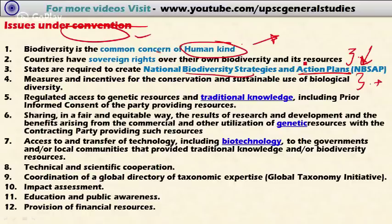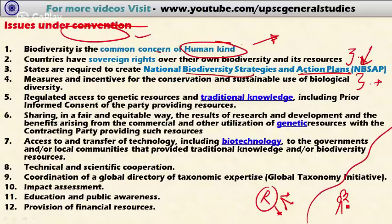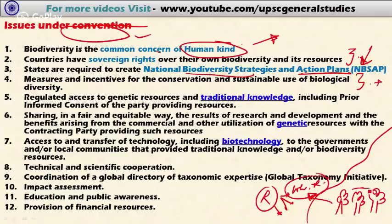Regarding access to genetic resources: biodiversity has various useful products for mankind. For example, in a forest we have wild plants — the wild counterparts of present-day crops including wheat, rice, and barley. These wild varieties growing in forests may have important characteristics such as resistance to drought and resistance to certain pests and diseases.